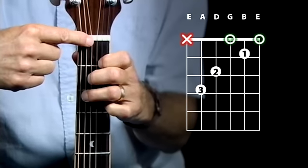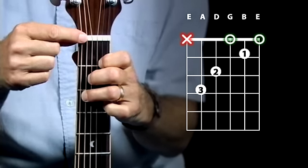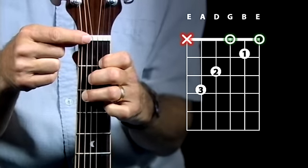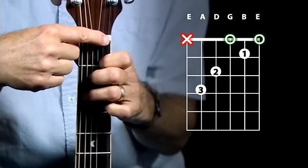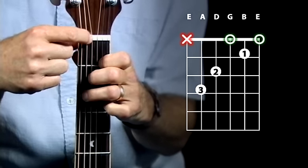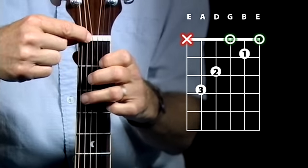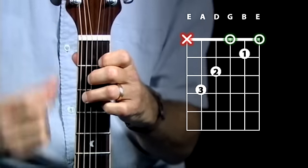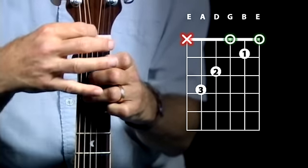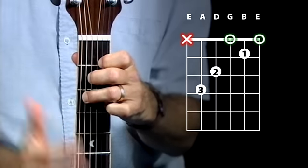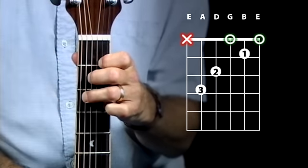right along here where your nut is, you'll notice some X's and O's, and whenever you see an X, that designates that you should try and avoid playing that particular string, and the opposite goes for the O's. If you see an O where there's not a fretted note, for example, with the C chord, you see that the third string here is open, so you can go ahead and strum that one. That is valid.